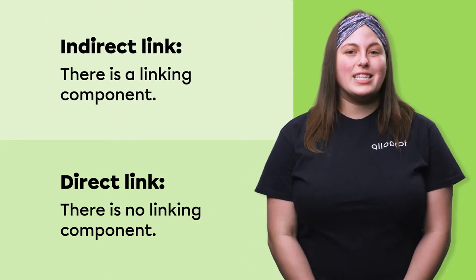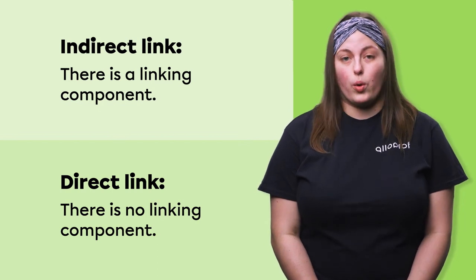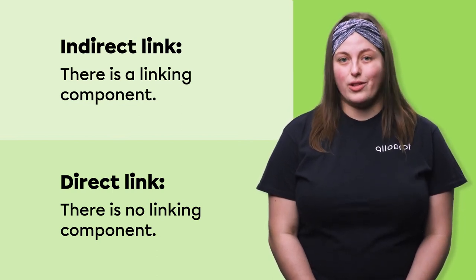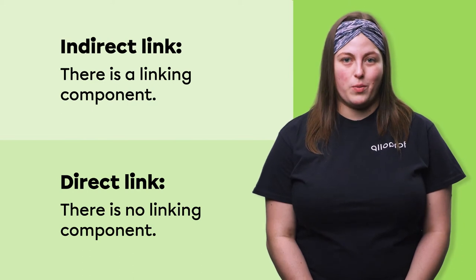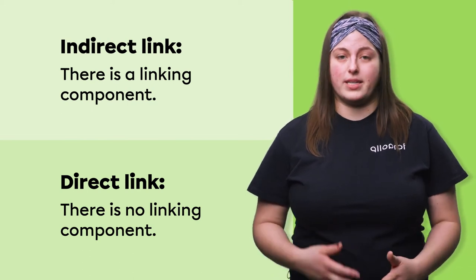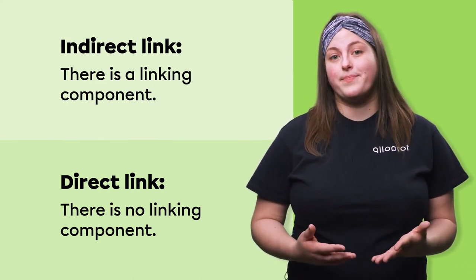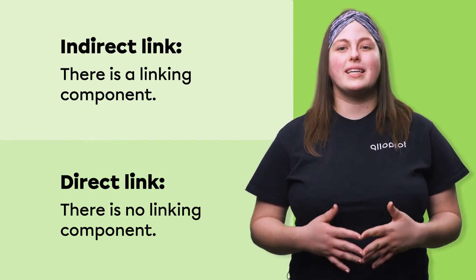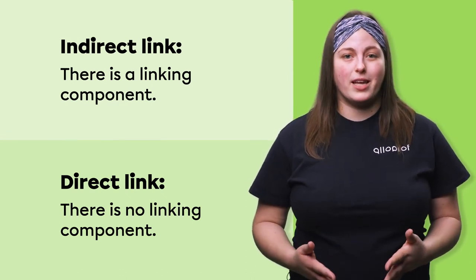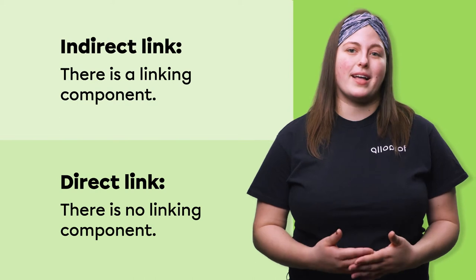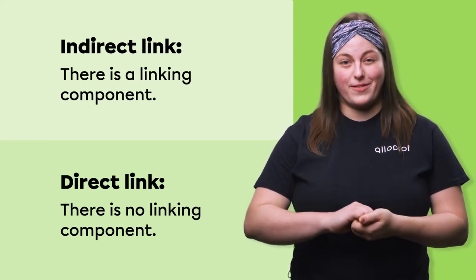An indirect link involves a linking component to hold the two parts together. The linking component is an intermediate unit which can be, for example, glue, a nail, or a rivet. On the other hand, when the link is direct, the two parts don't require a linking component to be fastened together. In other words, the two parts fit together.